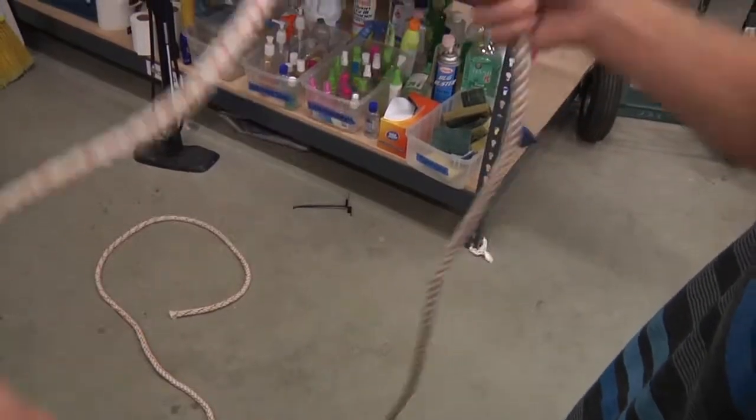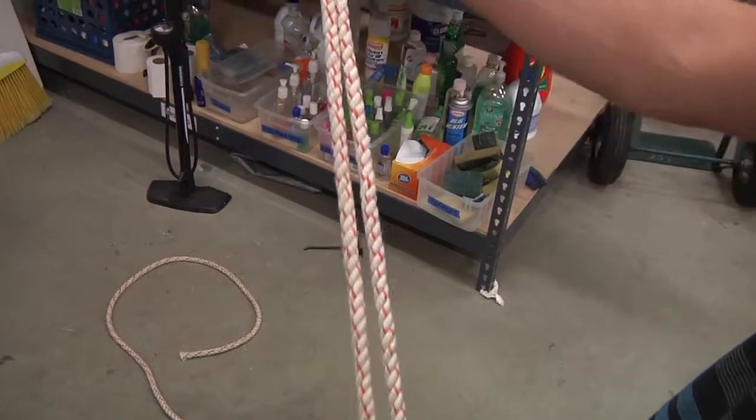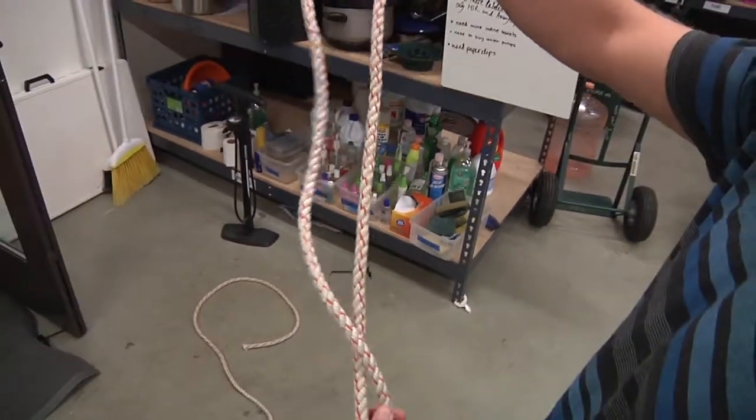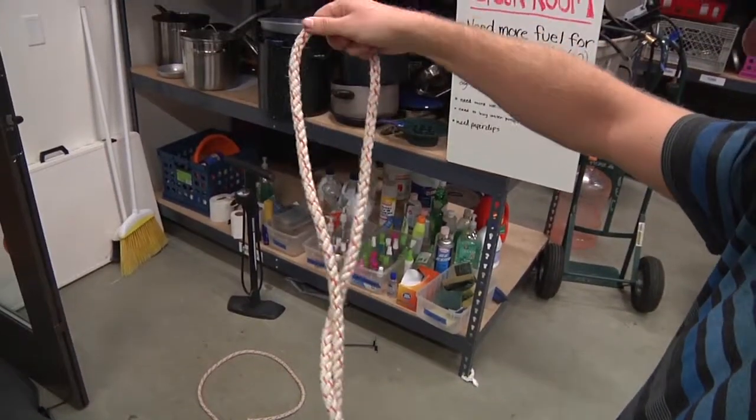So you have your rope, you create a big loop. You make one twist. You make a second twist.